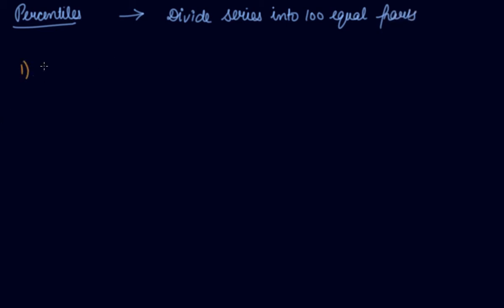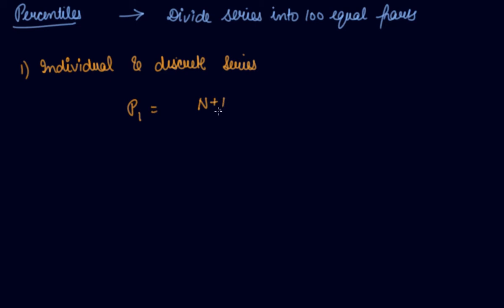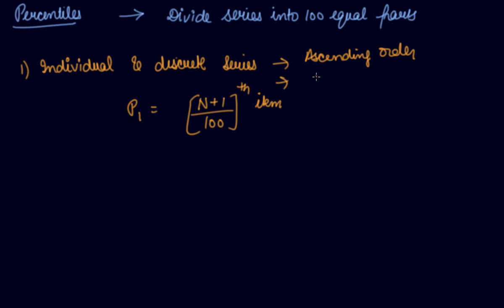In the case of individual and discrete series, if you have to find out the percentile, the formula is (n+1) divided by 100, giving 100 items. In discrete series, make sure you find out the cumulative frequency in ascending order.